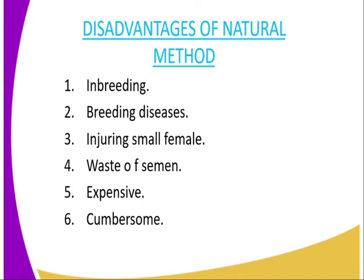You can also pass breeding diseases. For example, vaginitis and brucellosis are common breeding diseases which are normally transmitted. Therefore, through the natural mating method, such diseases may be transmitted to the young ones.